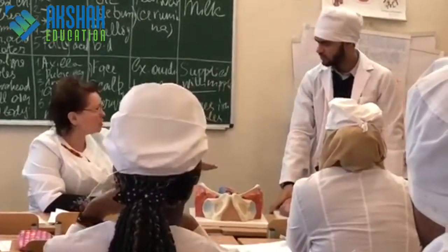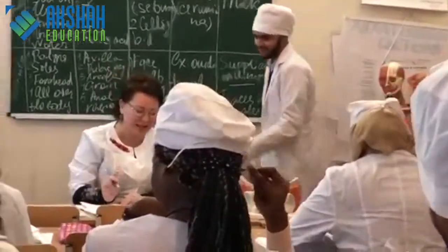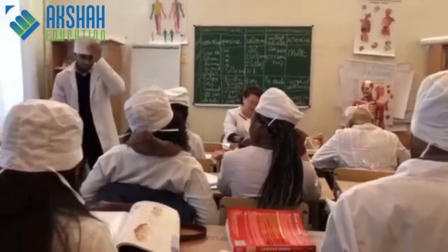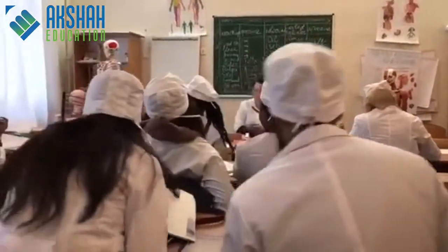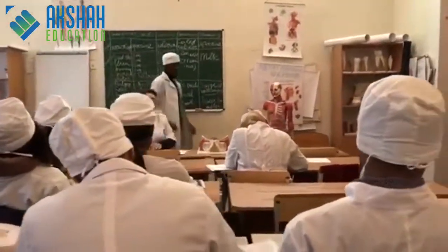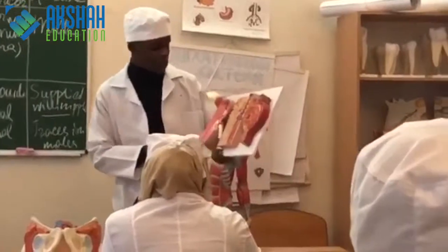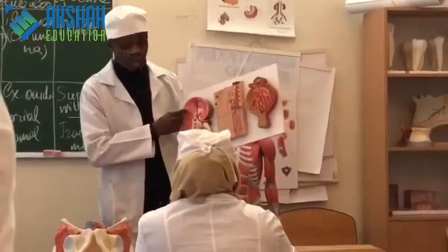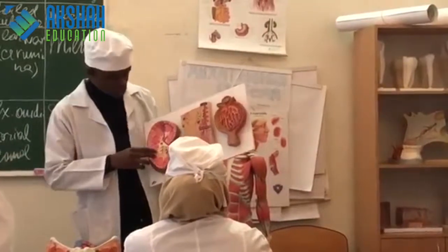Now we will move on to the structure of the kidney. On the outermost part we have the cortex, and the pinkish region inside is known as the medullary pyramid. The medulla is structured into pyramids, each pyramid functioning as a unit.